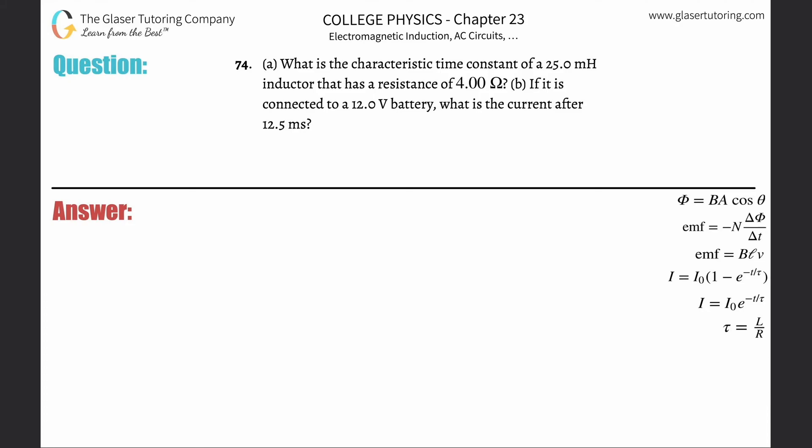Number 74, letter A. What is the characteristic time constant of a 25 millihenry inductor that has a resistance of 4 ohms? So this is relatively straightforward.